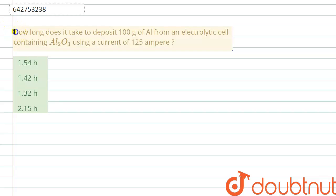The given question asks: How long does it take to deposit 100 grams of aluminum from an electrolytic cell containing aluminum oxide using a current of 125 amperes? Let's start solving this question.